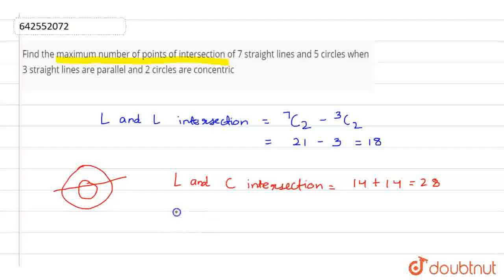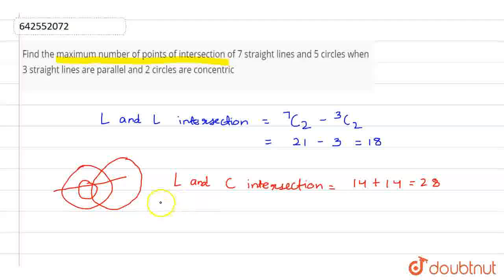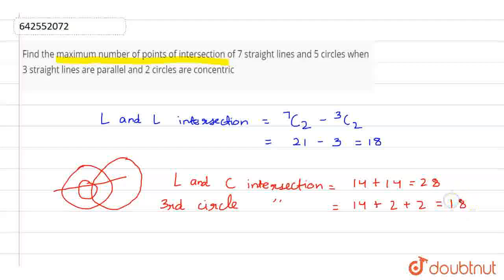Now we have 3 more circles. The 3rd circle can intersect 7 straight lines in 14 ways. But it can also intersect the previous 2 circles — 2 points each. So the 3rd circle intersection equals 14 plus 2 plus 2, which equals 18.